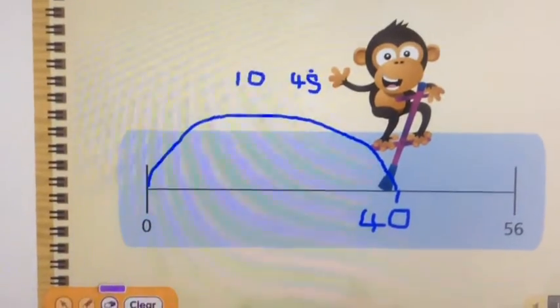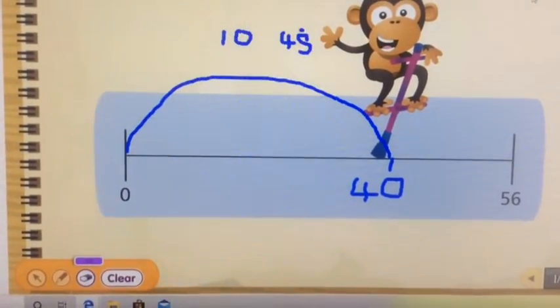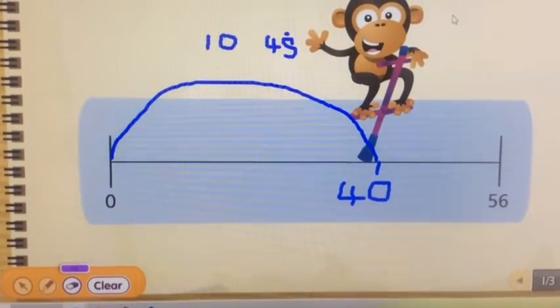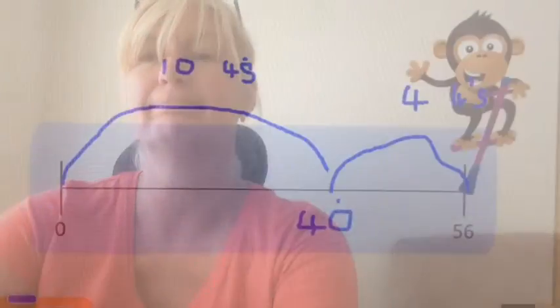There he is. But we haven't quite got there yet. We've got to go from 40 to 56 now. That's a jump of 16. How many fours make 16? Four, eight, twelve, sixteen. Four jumps of four would make that extra 16. There we are.